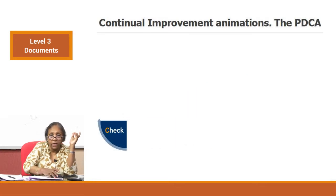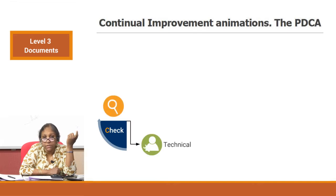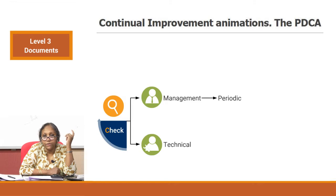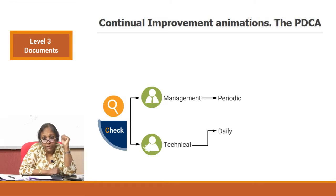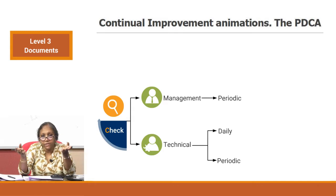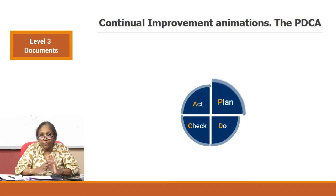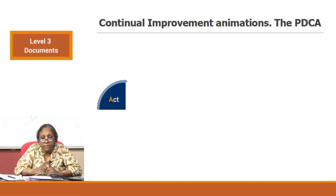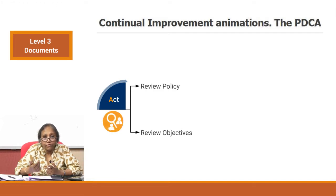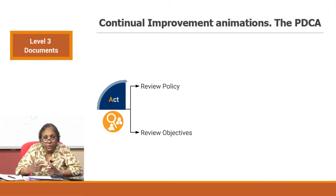Now that documentation is complete, somebody has to check it. Checking is done by both technical and management teams. The management team may review on fixed frequencies — maybe twice or four times a year — with management review meetings at least once a year. Technical teams supervise more often: some components reviewed weekly, some monthly, some daily. This continuous review happens because all activities are captured. The Act phase happens when the documents are checked and management or technical supervisory staff decide to review objectives or policy due to bottlenecks, and accordingly review and act on it, going back to the Plan phase.